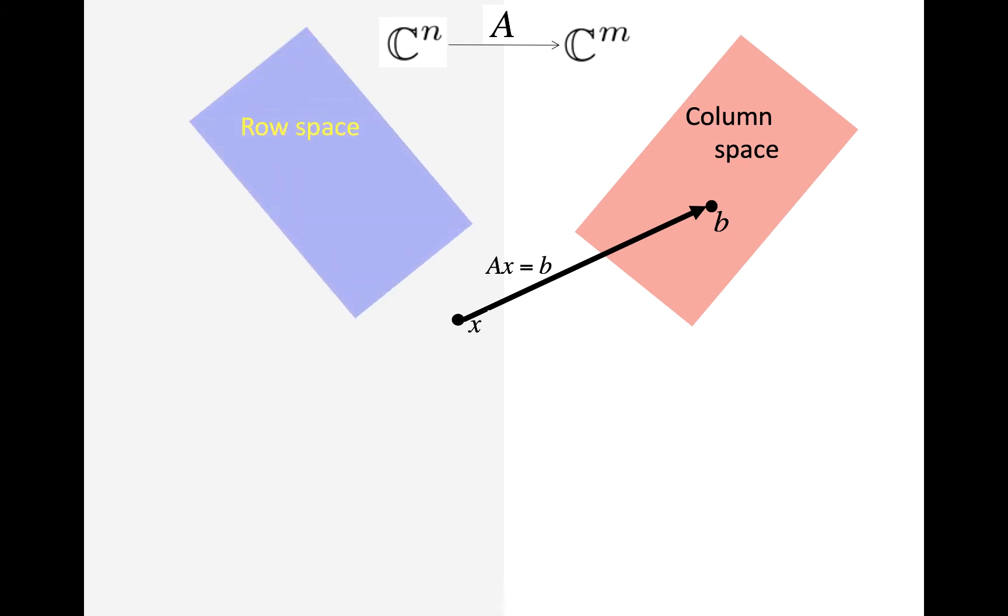On the left we have the row space, and we have the zero vectors on both sides, and then we have the null space. We know that the null space is orthogonal to the row space, and actually we know a little bit more than that. We know that all vectors that are orthogonal to the row space are in the null space, and all vectors that are orthogonal to the null space are in the row space.